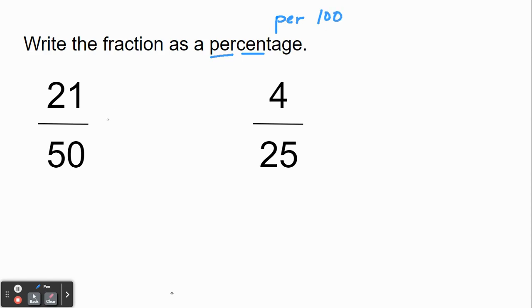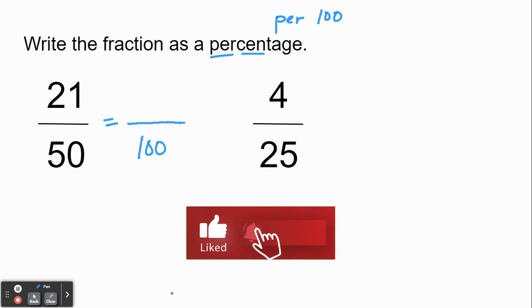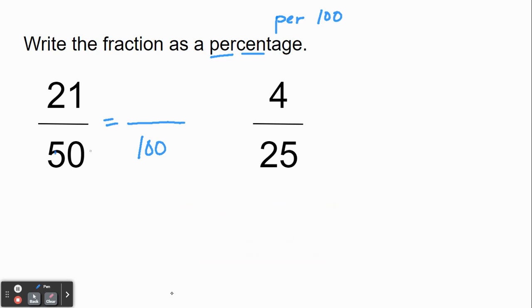So we're going to use that 100 on the bottom of a fraction. And I'm going to ask myself, 50 times what is going to give me 100, and that's going to be 50 times 2. Whatever we do to the bottom of a fraction, we must do the exact same thing to the top. So 21 times 2 here would give me 42.